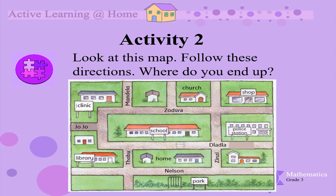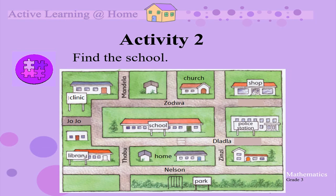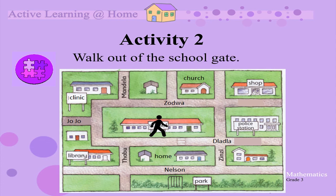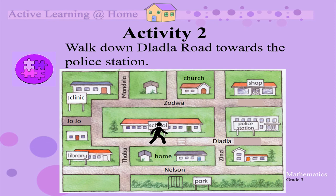Activity 2. Look at this map. Follow these instructions and see where you end up. Are you ready? Find the school. There is the school. Walk out of the school gate. Walk down Dladla Road towards the police station.